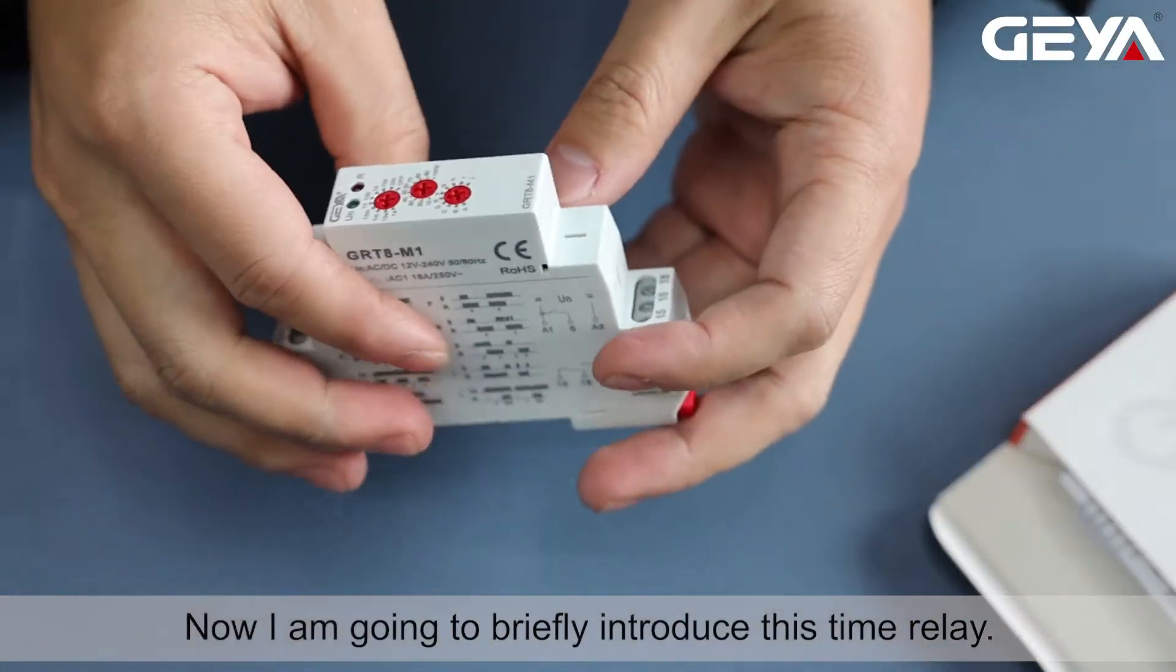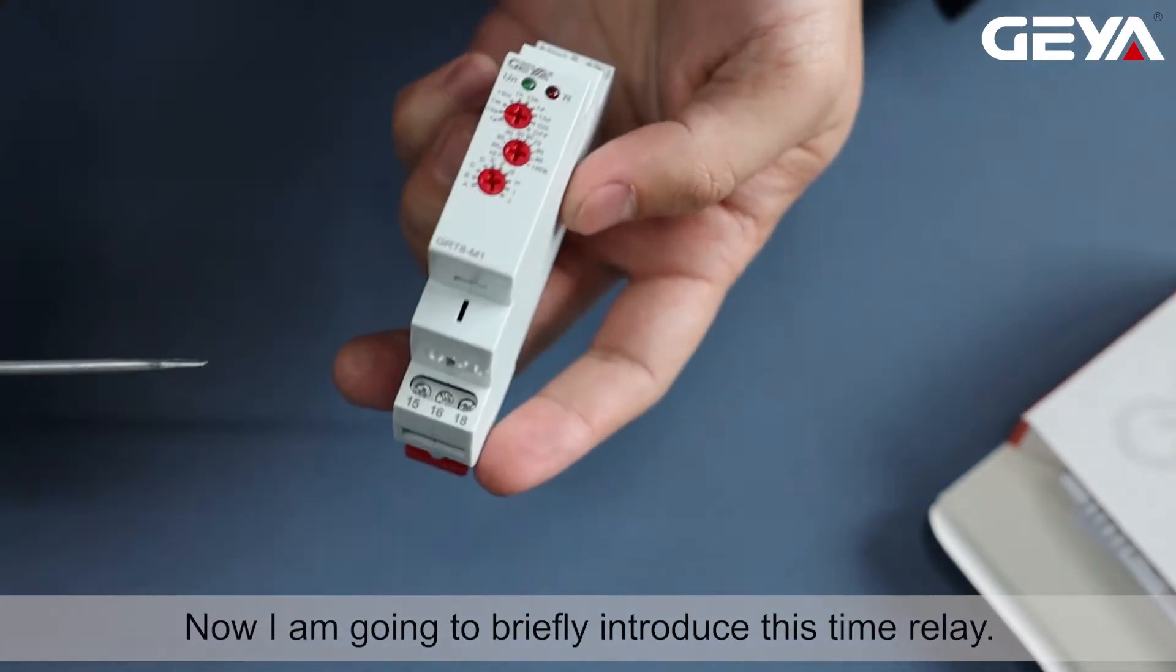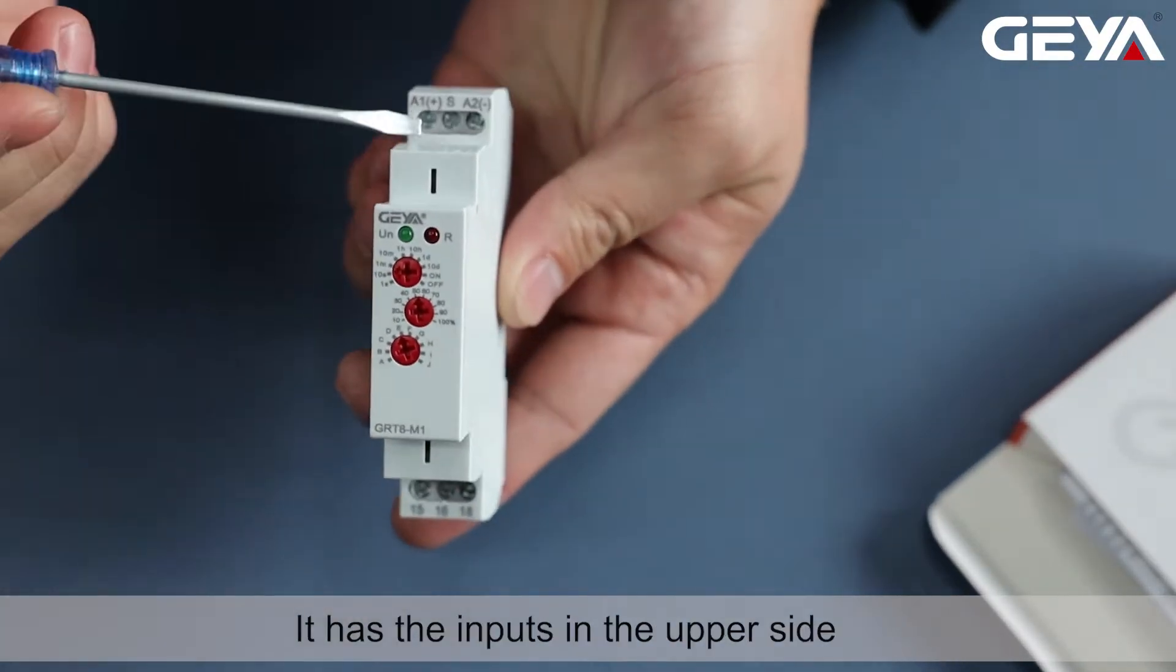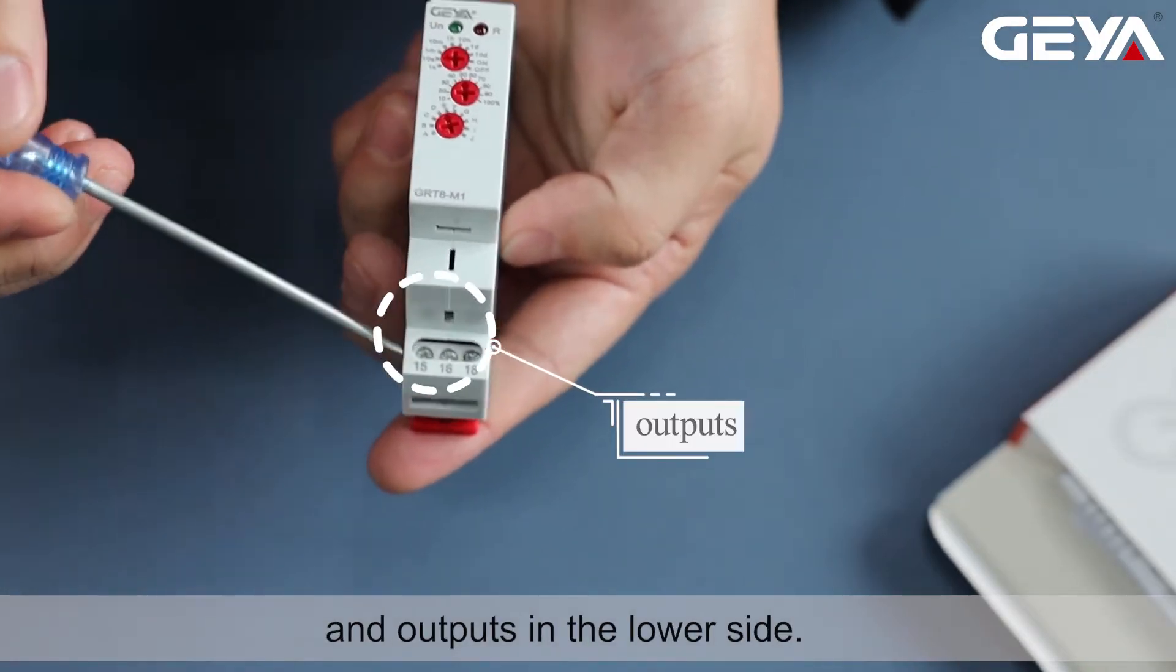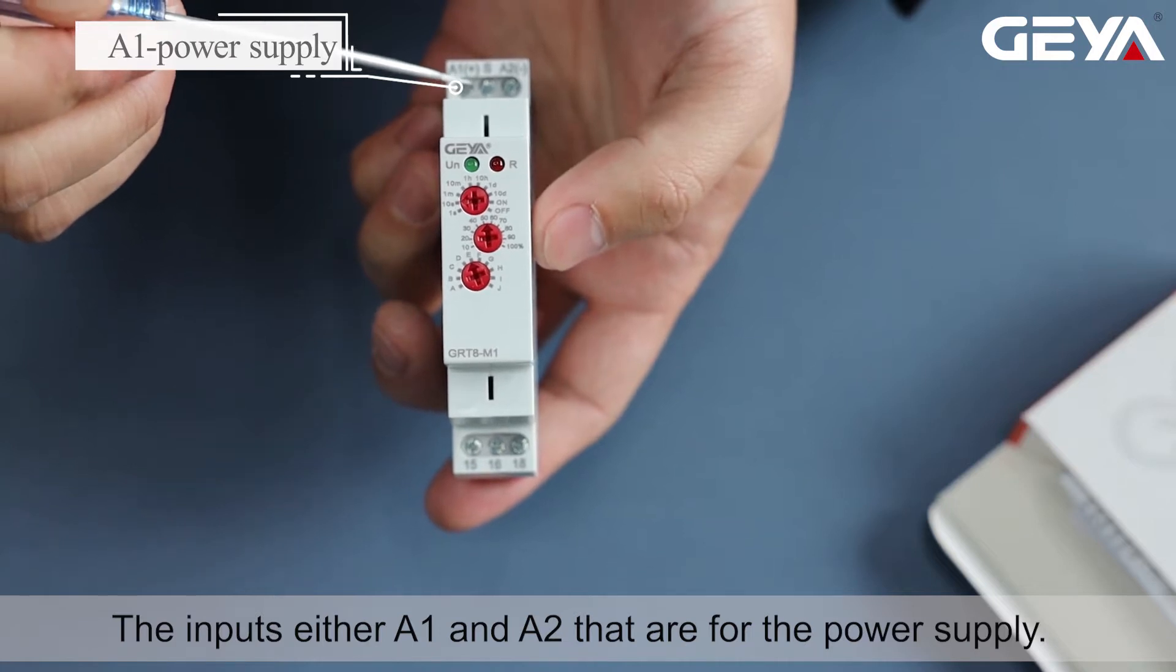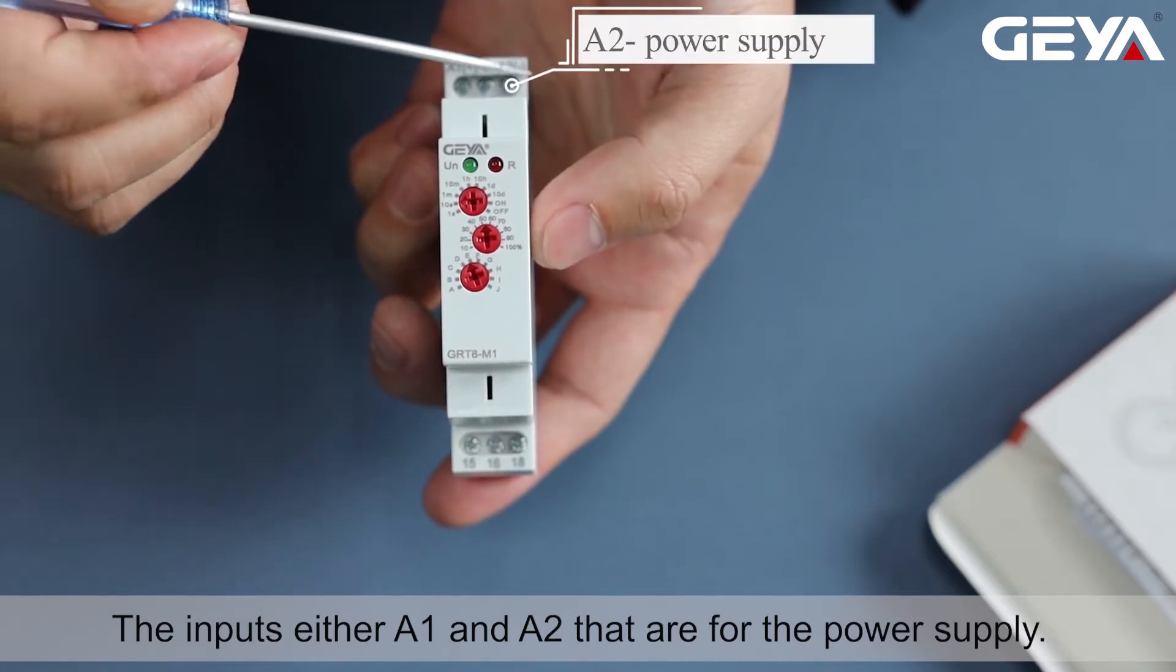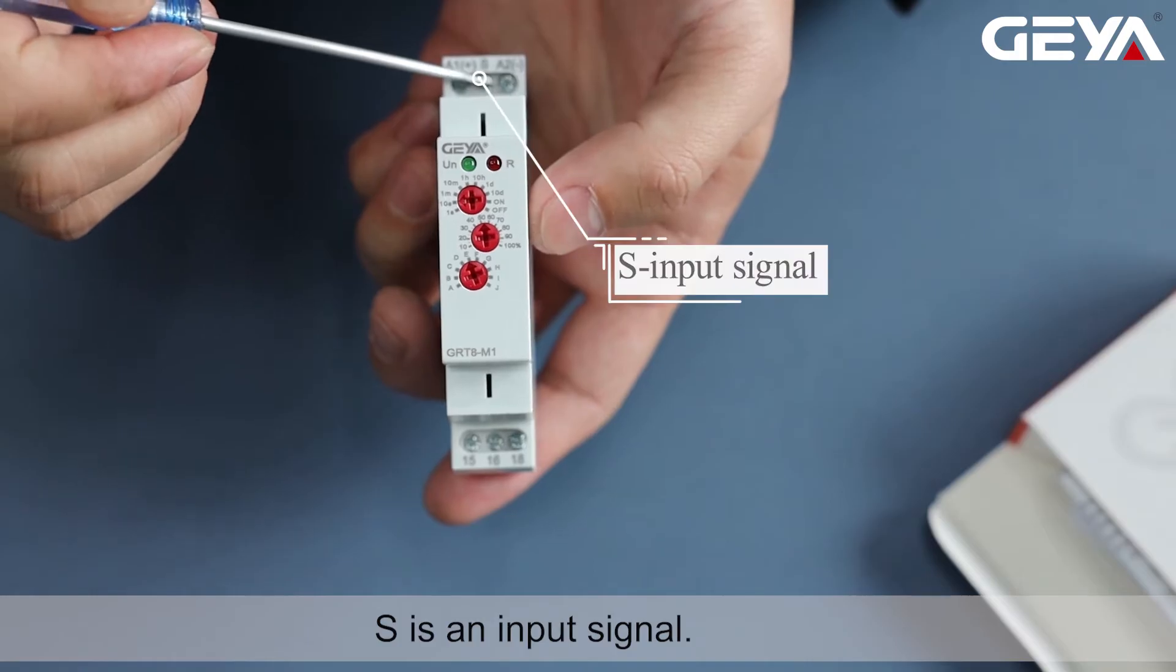Now I am going to briefly introduce this time relay. It has the inputs in the upper side and outputs in the lower side. The inputs A1 and A2 are for the power supply. S is an input signal.